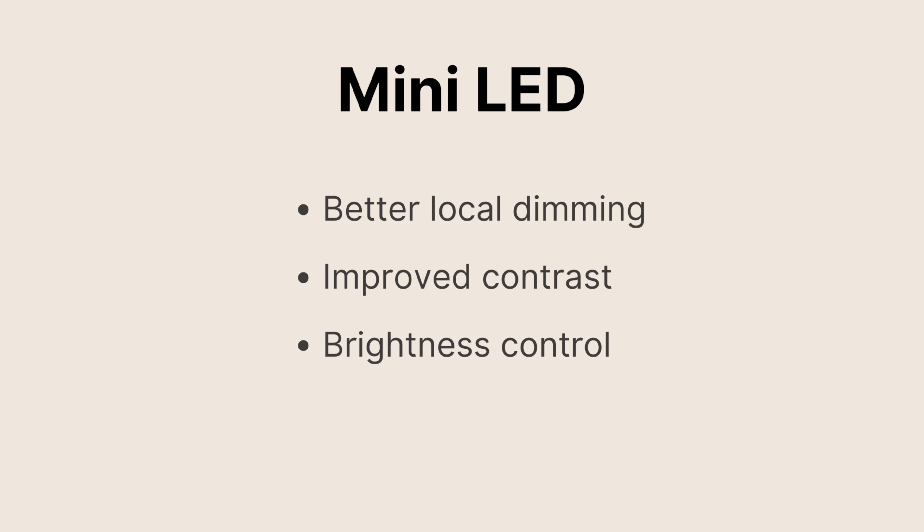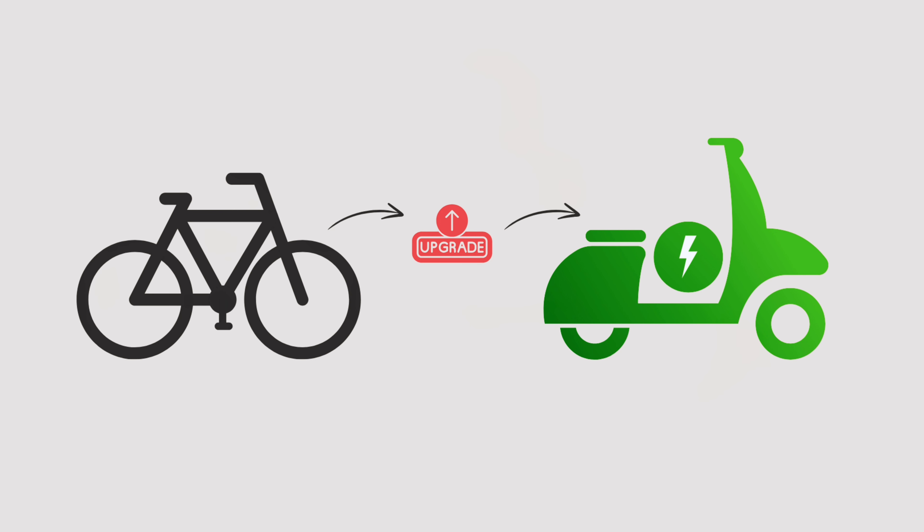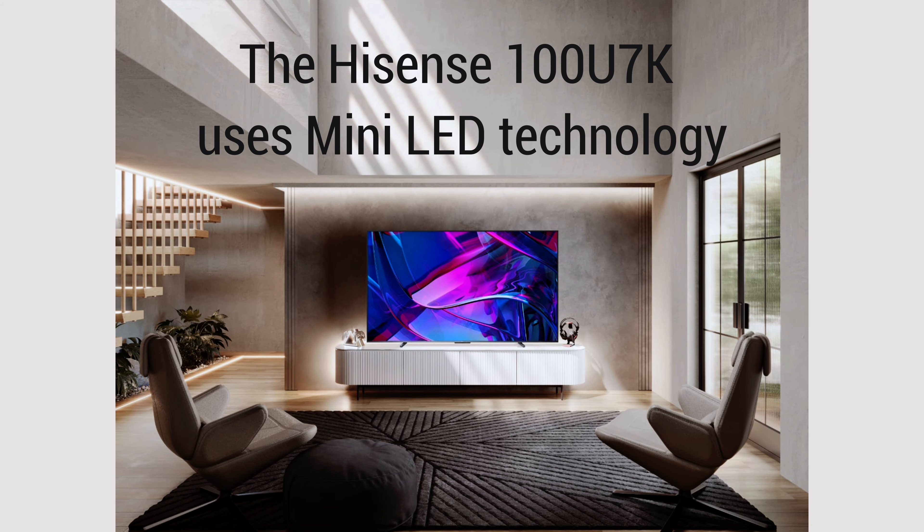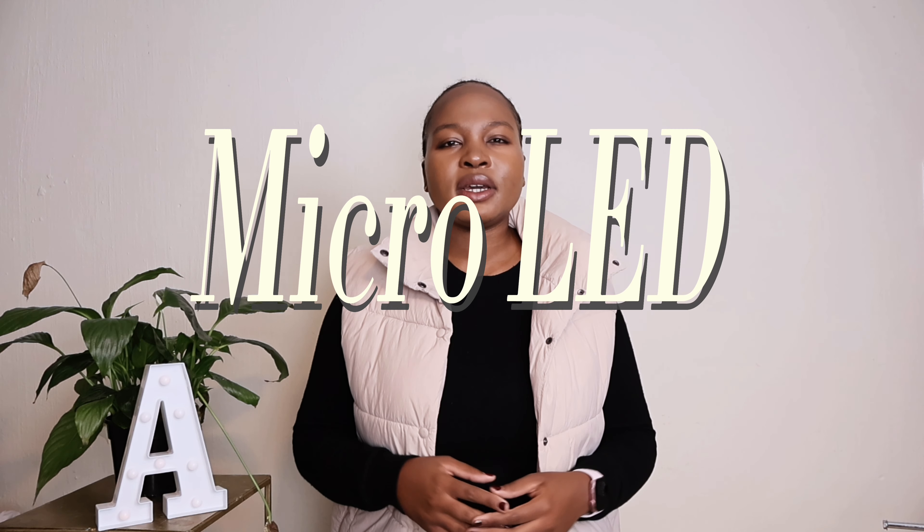Now let's talk about mini LED, which is essentially a variation of LCD technology in that it uses smaller LEDs for backlighting. Smaller LEDs mean better local dimming and improved contrast and brightness control — it's like upgrading from a bicycle to an electric scooter. Some high-end TVs and monitors feature mini LED technology.